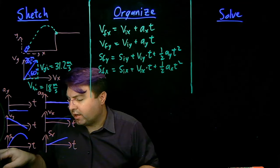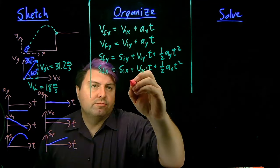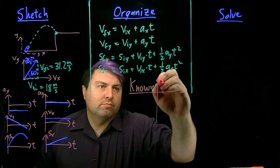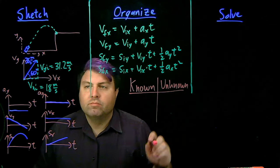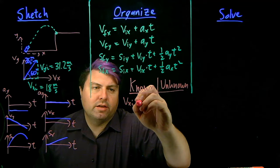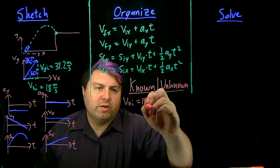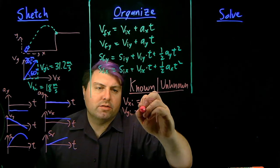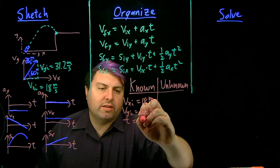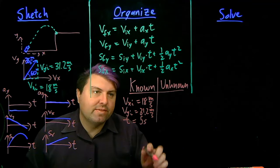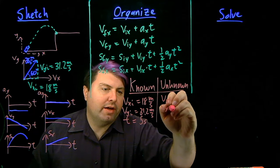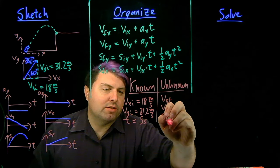And next we want to get our knowns and unknowns. So we just found through this we know now that vxi is 18 meters per second, vyi is 31.2 meters per second. We know in fact the time, it's five seconds, we're told that. We're trying to find vxf, vyf, and we're trying to find the final position in the y.